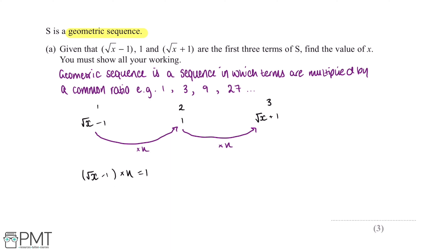In order to work out the value of x we're going to want to substitute something in place of k. If we look at the second and third terms, 1 multiplied by k equals √(x+1), and since 1 multiplied by k is just k, we can substitute √(x+1) in place of k. This gives us √(x−1) multiplied by √(x+1) is equal to 1.